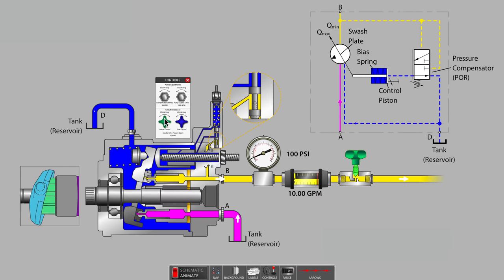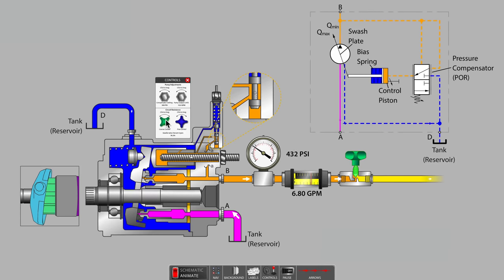Let's tighten the setting of the needle valve to cause greater circuit resistance. Naturally, this causes our system pressure to rise. Just after passing the 400 psi mark, we notice that the pump's pressure compensator has become active. Also notice that the swashplate is now moving and notice that the flow meter indicates less than full value.